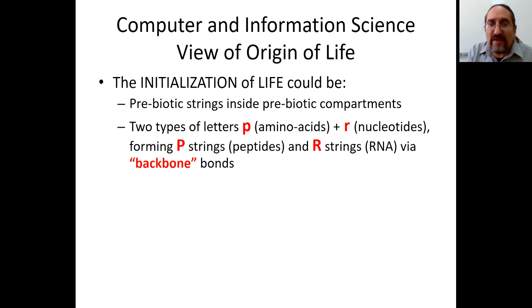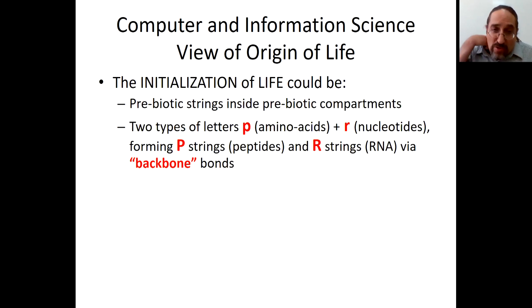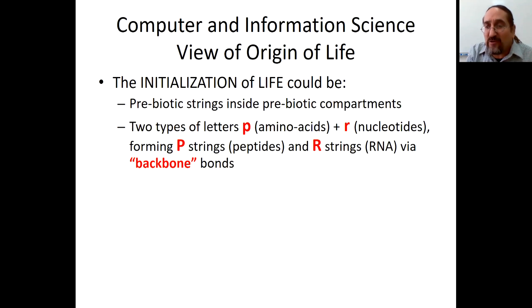We take a computer and information science point of view. We use letters and strings and try to have simple rules. We have two types of letters: P for amino acids, R for nucleotides. They form P-strings, which are peptides, and R-strings, which are RNA, via backbone bonds.